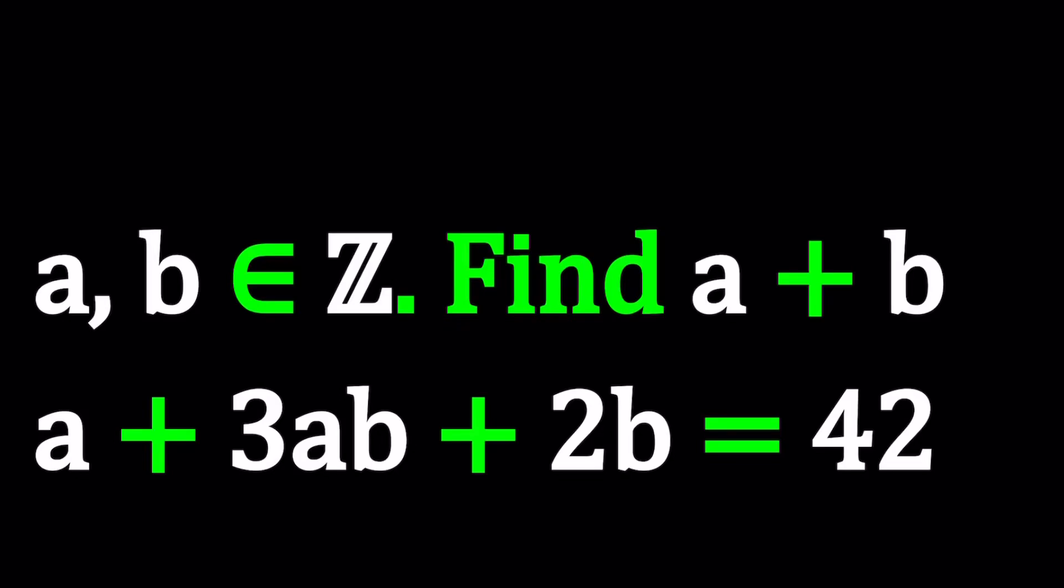Hello everyone. In this video we're going to be solving an equation with integers, which means we're going to solve a Diophantine equation. So A and B are integers, and we're given that A plus 3AB plus 2B equals 42. Let's get started with the original equation.